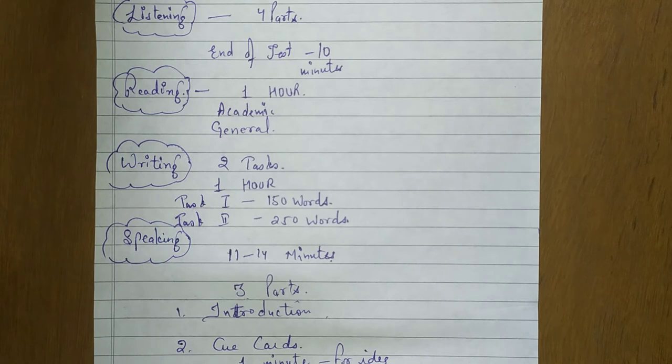The next is reading. It takes one hour. If you are an academic student and you want to get six bands, for that you have to get 23 marks out of 40. But if you are a general training student and you want to get six band, for that you will have to get 30 marks out of 40.